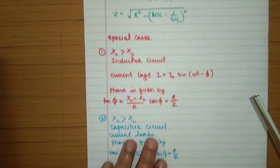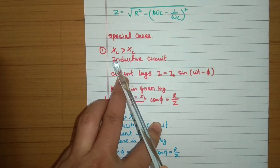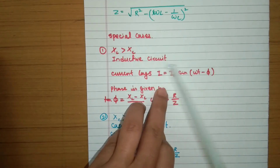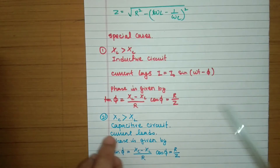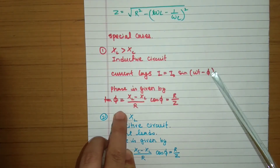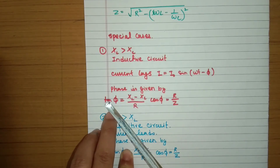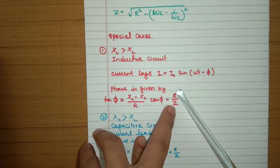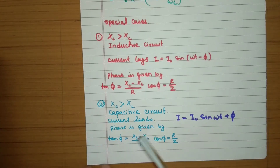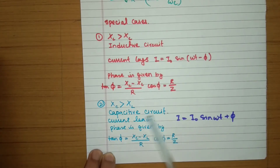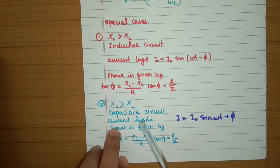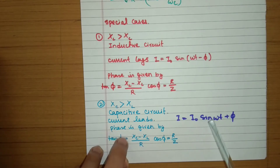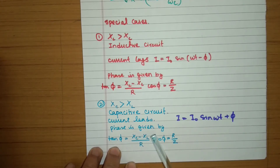There are special cases for the LCR circuit. When X_L > X_C, the circuit acts as inductive and current lags voltage; the phase angle φ is found from tan φ = (X_L − X_C) / R or cos φ = R / Z. When X_C > X_L, the circuit acts as capacitive and current leads voltage, so I = I₀ sin(ωt + φ), and tan φ = (X_C − X_L) / R.